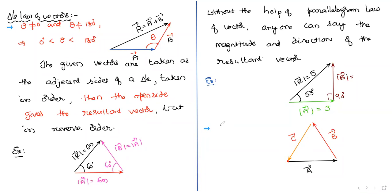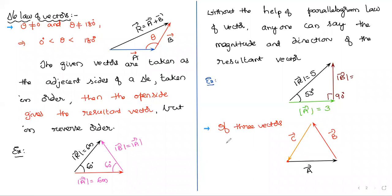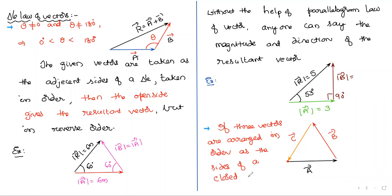If three vectors — having equal magnitude or unequal magnitude, it does not matter — are arranged as the sides of a closed triangle, taken in order, then the resultant is a null vector. This one is very important: in order, and it must be a closed triangle, not an open triangle.